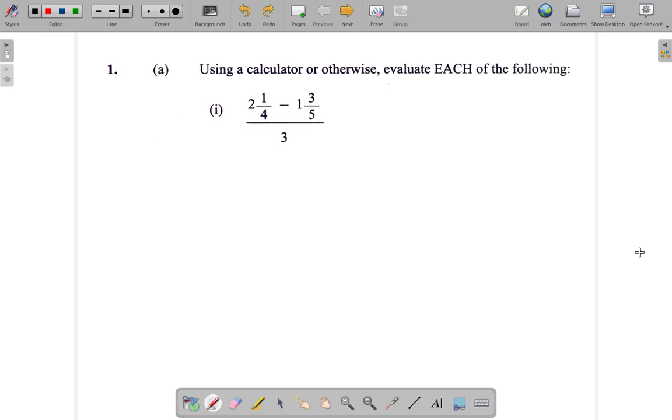I'm not using a calculator at this time. What we have is 2 and a quarter minus 1 and 3 fifths, all divided by 3. Let's concentrate on the top part here first: 2 and a quarter minus 1 and 3 fifths. As you see, these are mixed fractions. You have the whole number and the fractional part mixed up together.